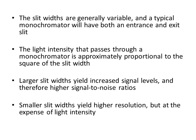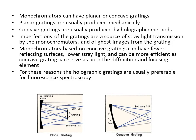Larger slit widths yield increased signal level and therefore higher signal-to-noise ratios. Smaller slit widths produce high resolution but at the expense of light intensity — the light intensity will be lower. Monochromators can have planar or concave gratings.